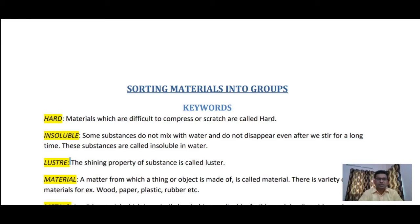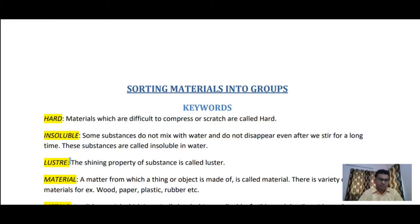The next keyword is 'lustre'. In Hindi it means 'chamak'. The shining property of a substance is called lustre. For example, metals like copper have lustre — that shining appearance is called lustre.